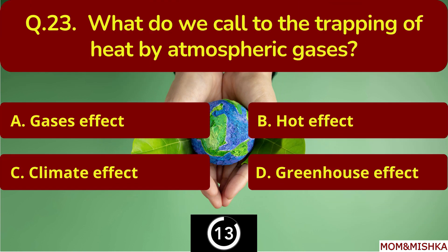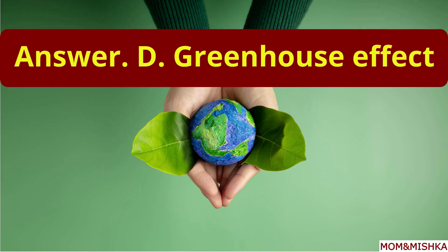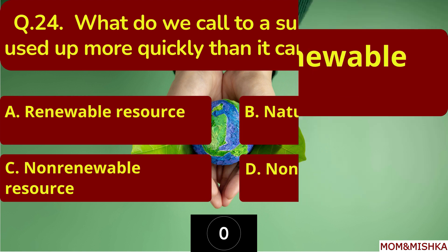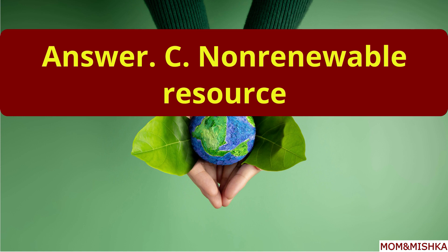What do we call the trapping of heat by atmospheric gases? What do we call a substance that is used up more quickly than it can replace itself? It's option C — non-renewable resource.